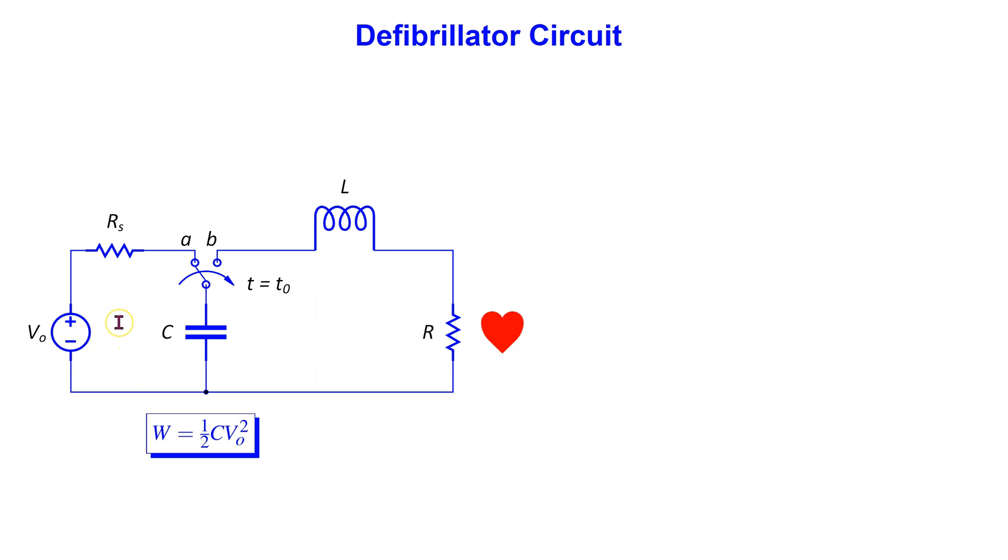In case of mains power supply, the mains voltage is converted to a high voltage of around 5000 volts using a step-up transformer. A rectifier then converts the high voltage AC to high voltage DC.